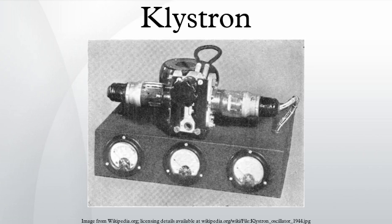Klystrons amplify RF signals by converting the kinetic energy in a DC electron beam into radio-frequency power. A beam of electrons is produced by a thermionic cathode and accelerated by high-voltage electrodes. This beam is then passed through an input cavity resonator. RF energy is fed into the input cavity at, or near, its resonant frequency, creating standing waves, which produce an oscillating voltage which acts on the electron beam.